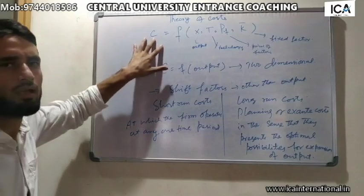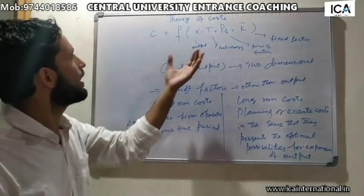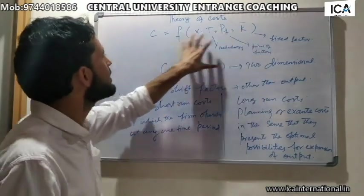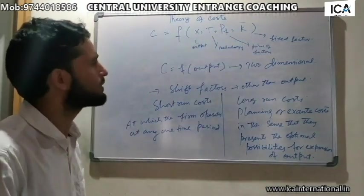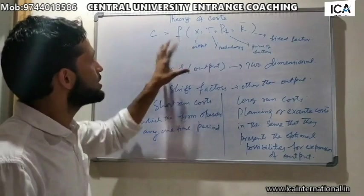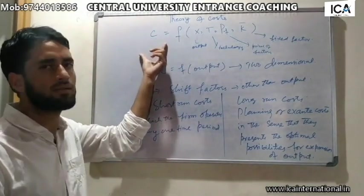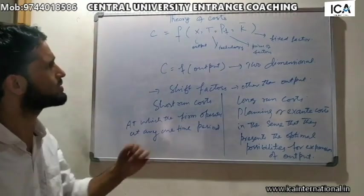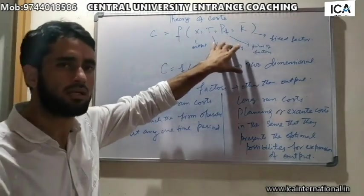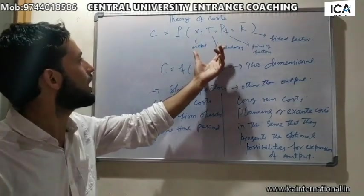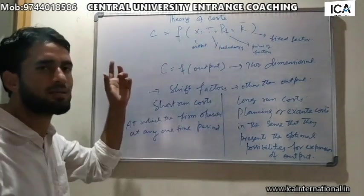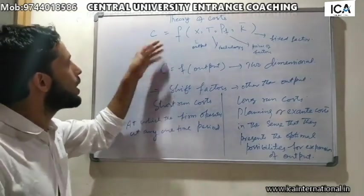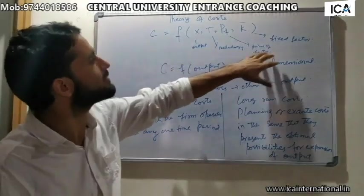Here C is a dependent variable and these all are independent variables. In case of a function, it is a relationship between dependent and independent variables. If there is a change in the independent variables, automatically it causes a change in the dependent variable. So cost is a function of different factors.